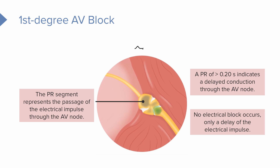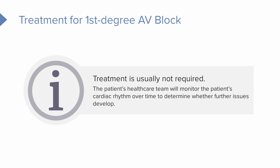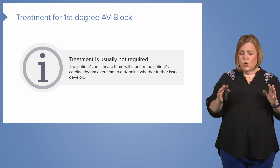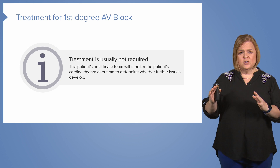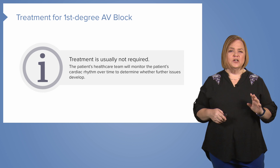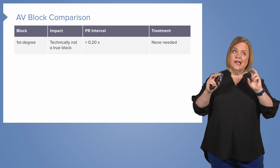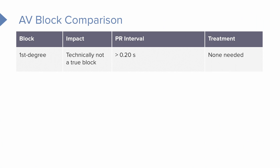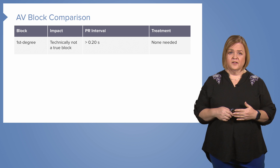Something important to keep in mind: the stimulus always reaches the ventricles, so technically it's not a true block. For first degree AV block, treatment is usually not required. The patient's healthcare team will monitor the cardiac rhythm over time to see if it worsens or further issues develop. The only difference between normal sinus rhythm and first degree AV block is the PR interval, which will be greater than 0.20. They'll keep regular checkups to make sure things remain at a first degree AV block.